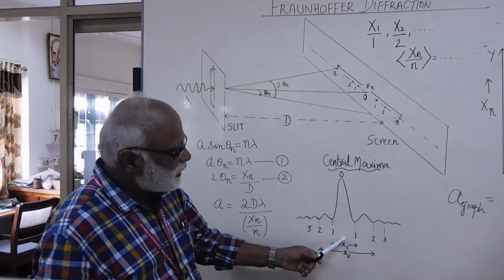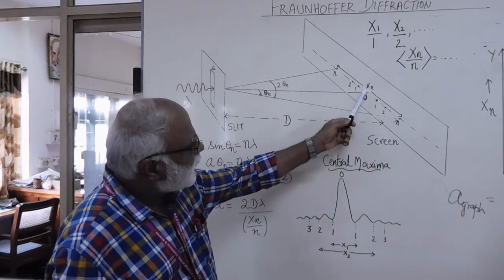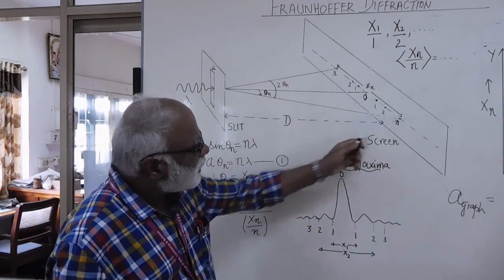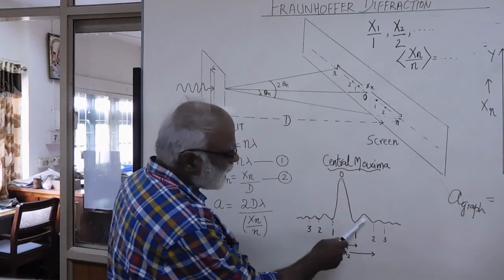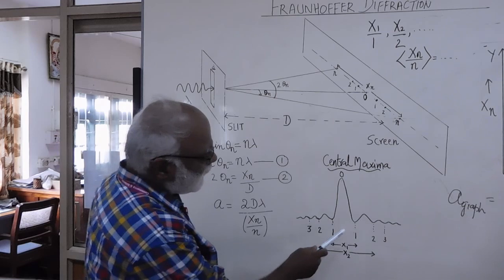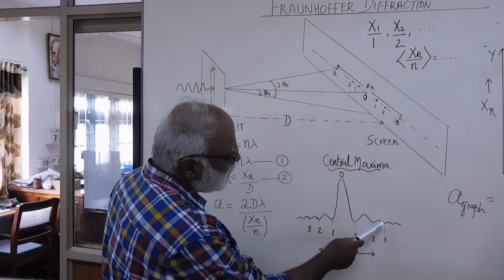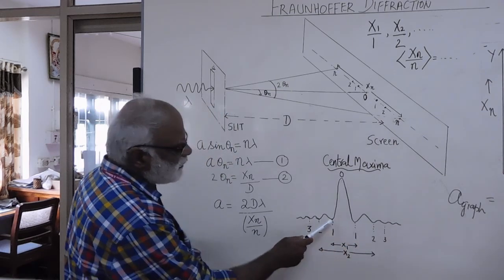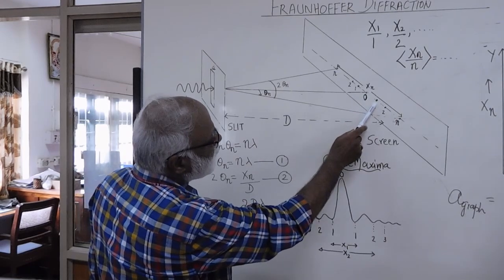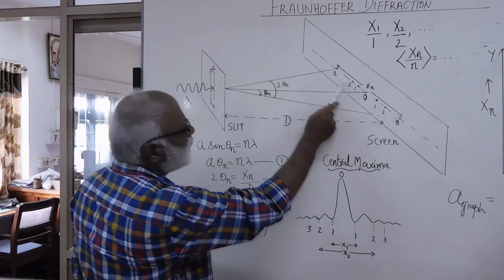The diffraction pattern is schematically shown in this figure. At a point directly behind the slit we get the central maxima or the brightest spot. On either side of the central maxima you will find secondary maxima and minima. In this schematic diagram we have shown the first minima, second minima, third minima, and symmetrically the minima on the other side of the central maxima.